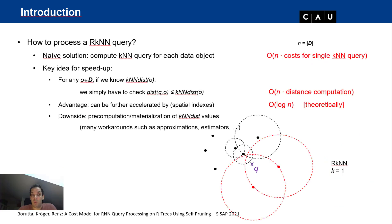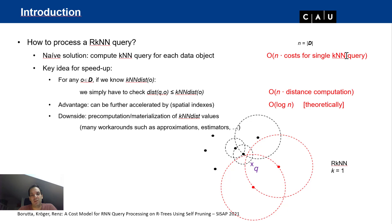How do we compute reverse nearest neighbors? The naive solution is to compute k-nearest neighbor queries for each data object and check if the query object appears in the result list. This requires computing k-NN for all n objects in the database. The lookup cost depends on k, so the total cost is n times the cost of the similarity query — roughly O(n²) without any index.